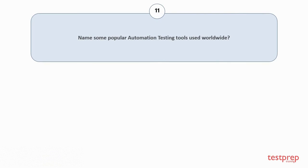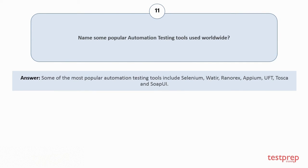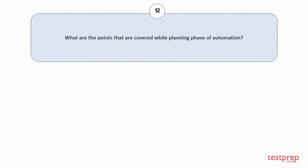Question number eleven: Name some popular automation testing tools used worldwide. Some of the most popular automation testing tools include Selenium, Watir, Ranorex, Appium, UFT, Tosca, and SoapUI.